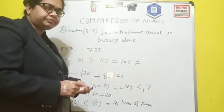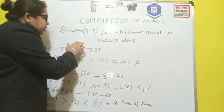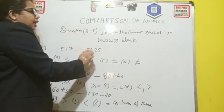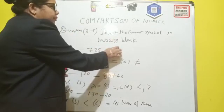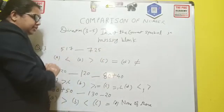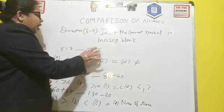So we will see the direction question today. The questions are from question number 3 to 5, insert the correct symbol in missing blank. So what is my question here? 5, 1, 7 and we have to put a symbol here in between and 7, 25.